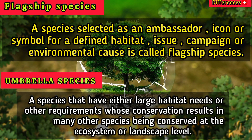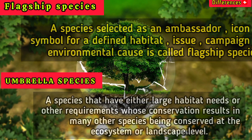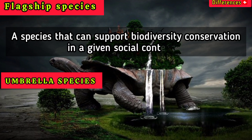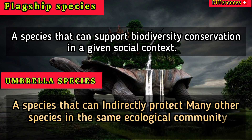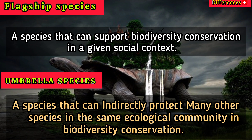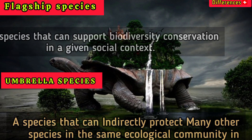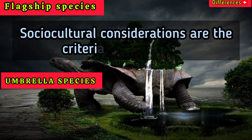An umbrella species is a species that has either large habitat needs or other requirements whose conservation results in many other species being conserved at the ecosystem or landscape level. It is a species that can support biodiversity conservation in a given social context and can indirectly protect many other species in the same ecological community.